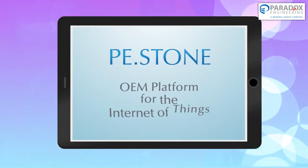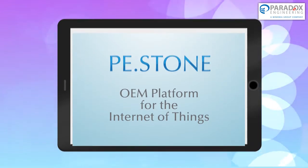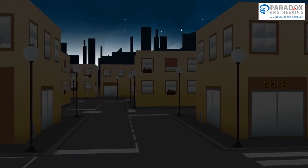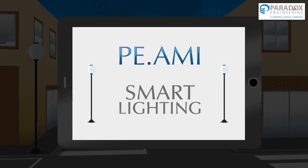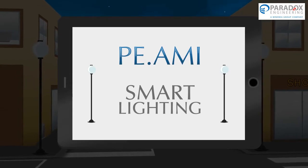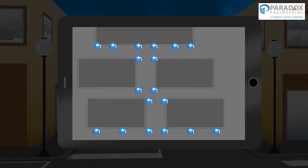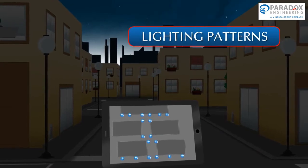Street lighting is a key domain for many communities. Thanks to PE-AMI lighting management solution, cities can build a self-configuring and self-healing architecture to manage their lighting infrastructures.